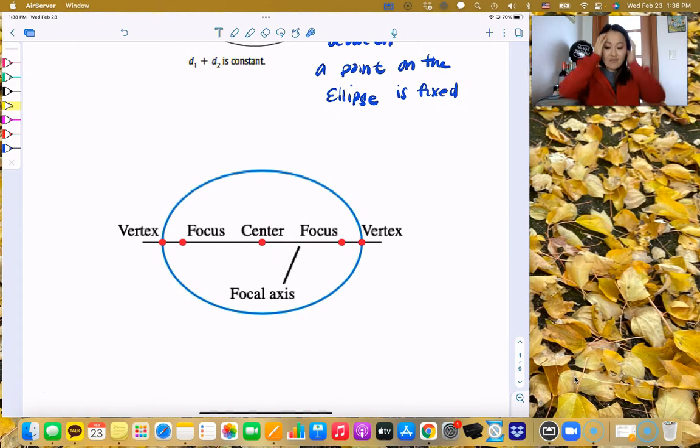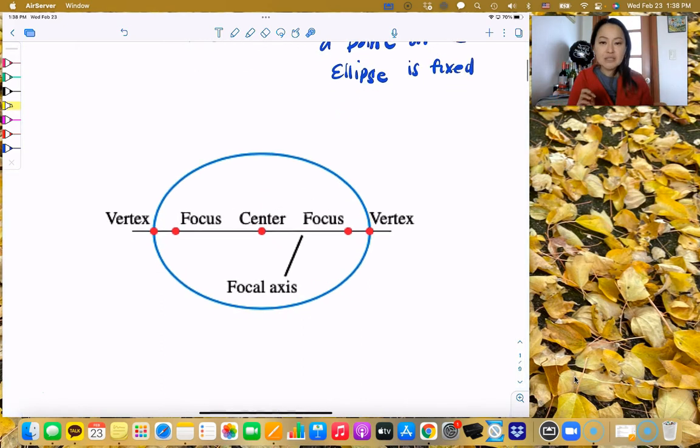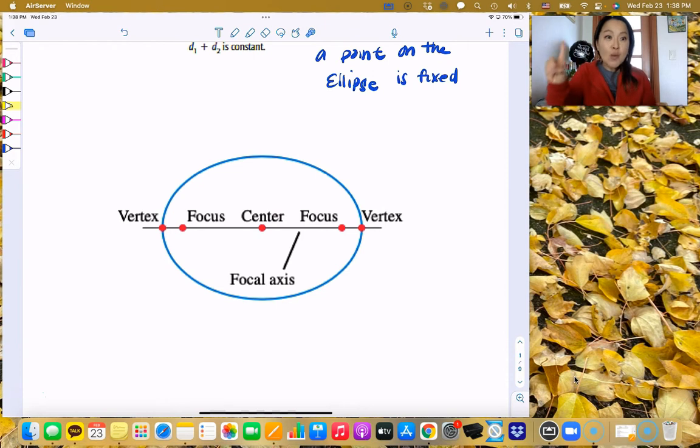All right, so we have here an ellipse. And here are all its parts. Again, ellipse has two different types of ellipses. One that looks like Mr. V's face, one that looks like Ms. Chang's face. One that's horizontal and one that's vertical.